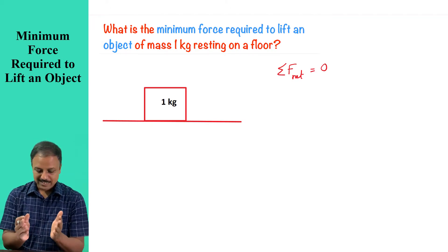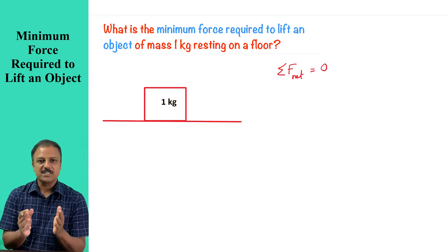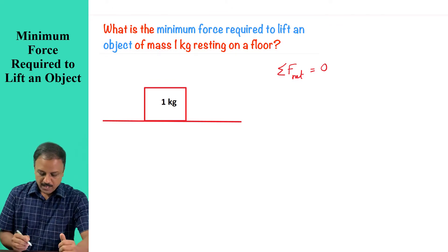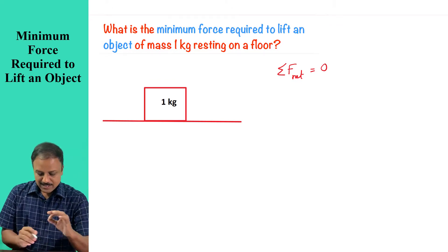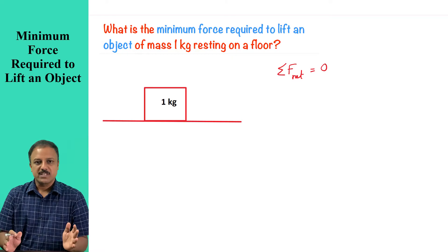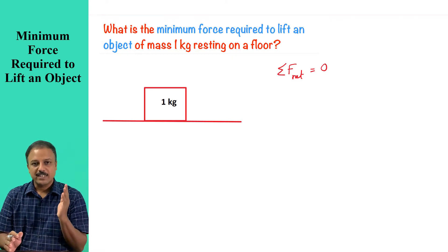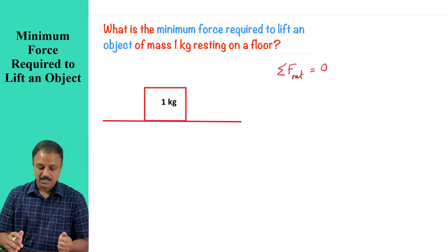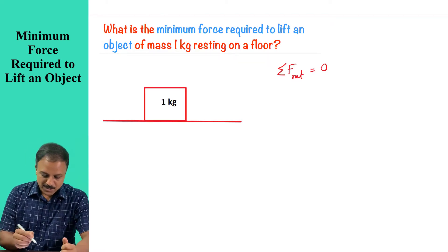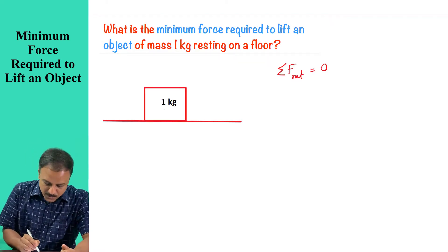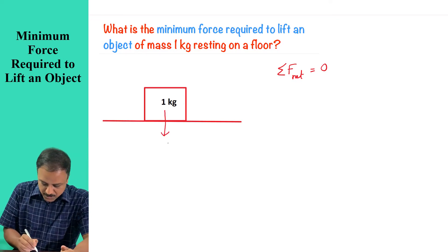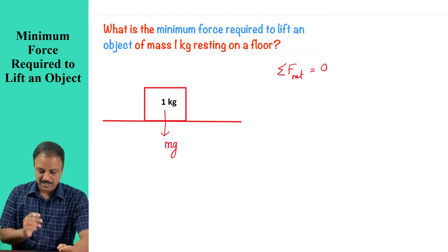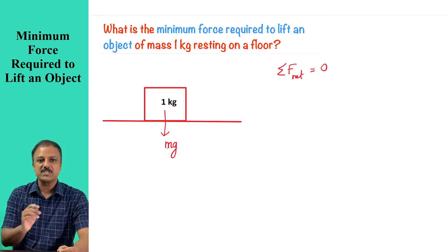Here it is clearly given the object is at rest. I can see that there are no horizontal forces acting on the object, but there does exist a vertical force. Now what is that vertical force? We have the force due to gravity, which is acting downwards, which you can write as m times g.